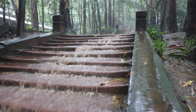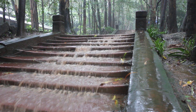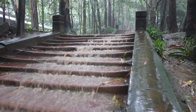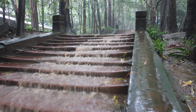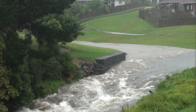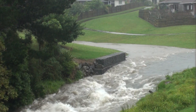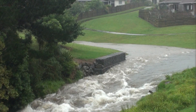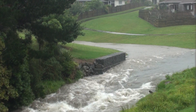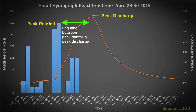Since most rainwater falls onto the land before making its way into rivers, there is a lag time between the time of peak rainfall and peak discharge. A flood hydrograph can be used to work out how quickly this occurs.